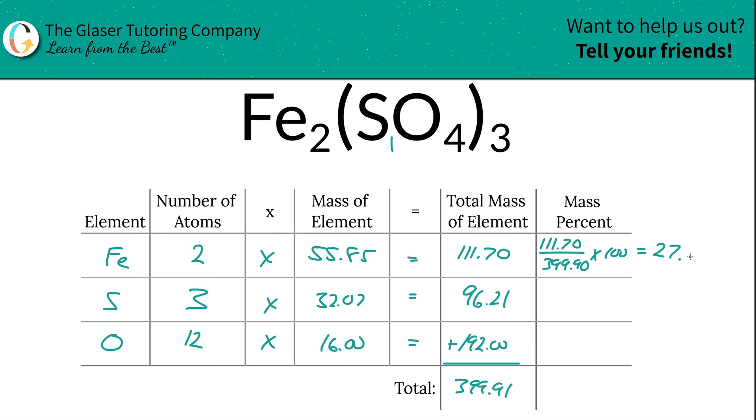We do the same process for sulfur. Take the total mass of sulfur (96.21) divided by the total mass of the entire compound (399.91), multiply by 100, and it works out to be 24.06 percent.